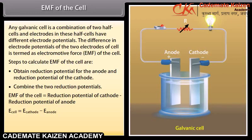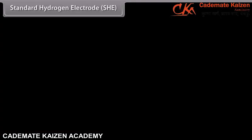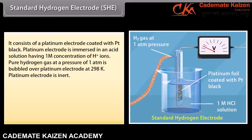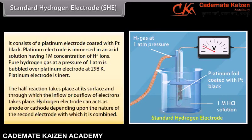Electrode potential: The electrical potential difference set up between the metal and its ions in the solution is called electrode potential. When a strip of metal is brought in contact with a solution containing its own ions, there is a possibility of either of three processes: metal ions may collide with the metallic strip and bounce back without any change; metal atoms on the surface of the strip may lose n electrons and enter the solution as ions; or metal ions may collide with the metal strip and gain n electrons and get converted into metal atoms.